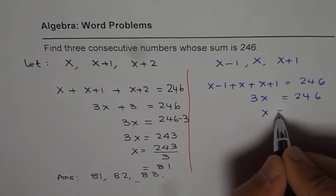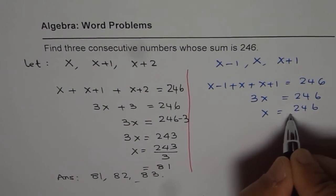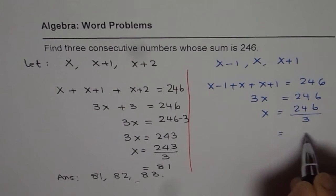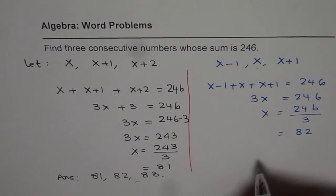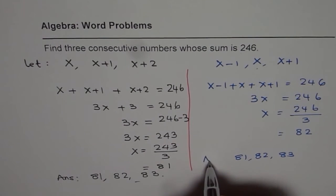So 3x equals 246 divided by 3, which is 82. So, 82 is the center number, mind it. So when you write down your answer, write 82, one number after, one number before, and that is your answer.